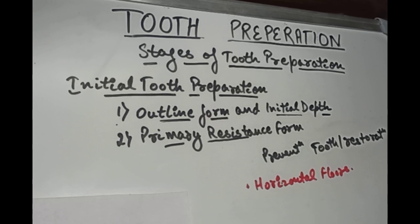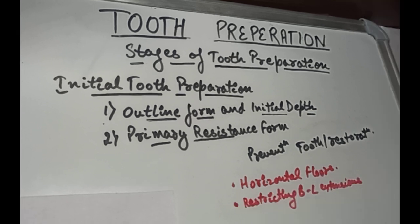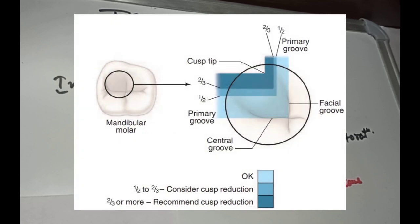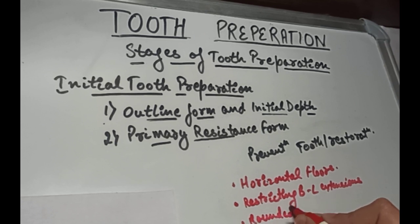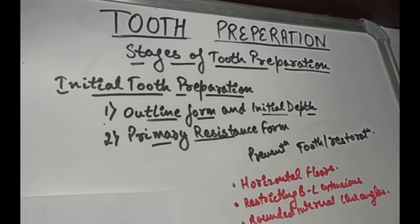The principles of resistance form are: the floors — that is the gingival floor and the pulpal floor — should be horizontal and flat in order to best withstand the occlusal forces. Then, restricting the buccolingual extensions of the external walls to allow strong cusp and ridge areas to remain with sufficient dentine support. If the extension is more than half the distance from the primary groove to the cusp tip, we need to consider capping the cusp, but the main aim is to preserve the cusps and marginal ridges. The third principle is rounded internal line angles.